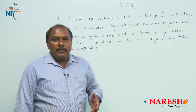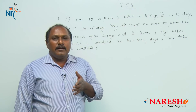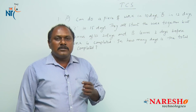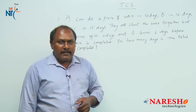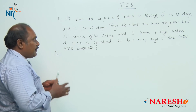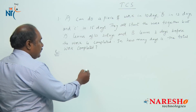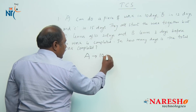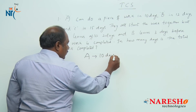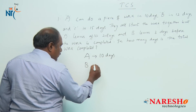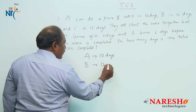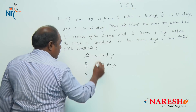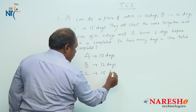This particular problem can be solved in many different ways. Let us look into a method where we can solve this problem in a very simple way. Let us first write down the given information: A can complete the work in 10 days, B can complete the same work in 12 days, and C can complete the same work in 15 days.